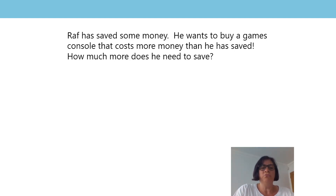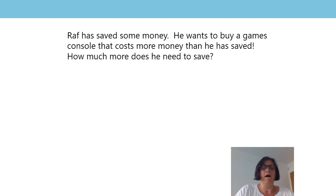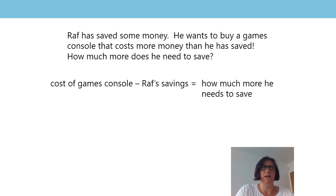Here's our question for today. Ralph has saved some money. He wants to buy a games console that costs more money than he has saved. How much more does he need to save? What could I draw to represent this problem? Pause the lesson now while you have a think about how you could do this and jot your ideas on a piece of paper. Let's think of how we'd organise the information if we did have it. I know the cost of the games console is going to be my minuend, and from that I can subtract how much he's saved, and that will tell me how much more he needs to save.